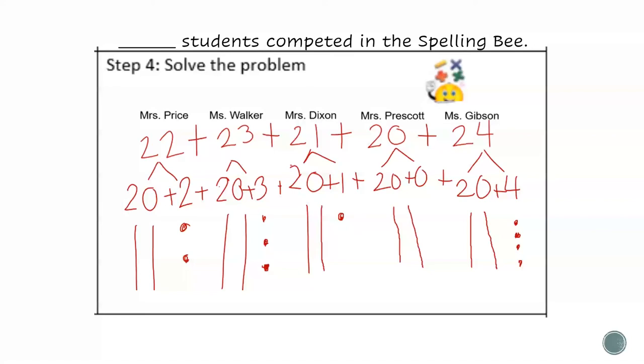Let's count the tens first. 10, 20, 30, 40, 50, 60, 70, 80, 90, 100.